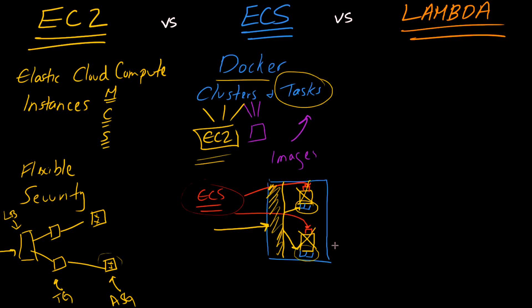To recap ECS: you deploy your images to ECR, associate them with tasks, and deploy those tasks into clusters. Clusters can be EC2-based or Fargate-based. You can attach load balancers to have a robust, scalable system that flexes based on your traffic patterns.